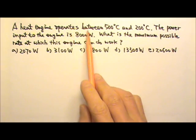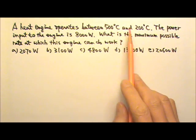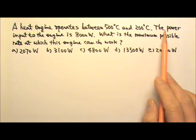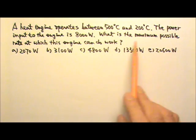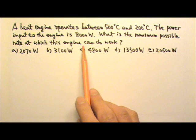A heat engine operates between 500 degrees Celsius and 200 degrees Celsius. The power input to the engine is 8,000 watts. What is the maximum possible rate at which this engine can do work?